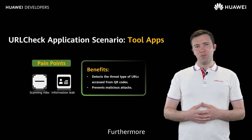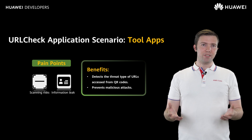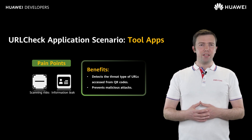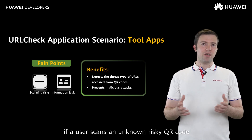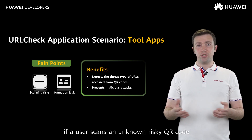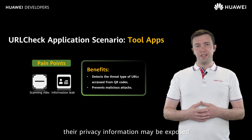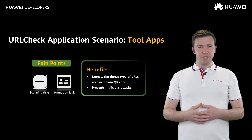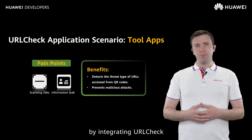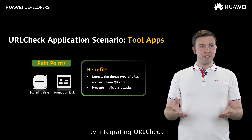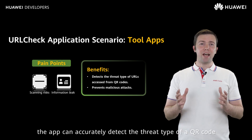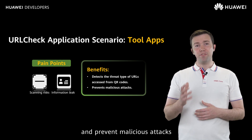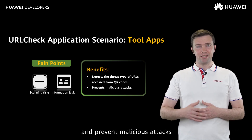Furthermore, in terms of tool apps such as a scanner app, if a user scans an unknown risky QR code, their privacy information may be exposed. However, by integrating URLCheck, the app can accurately detect the threat type of the QR code and prevent malicious attacks.